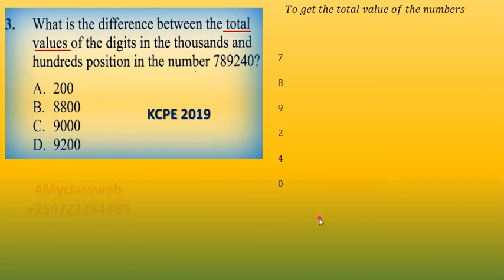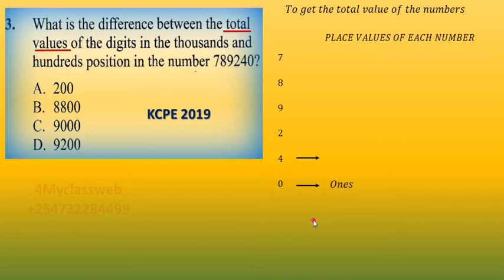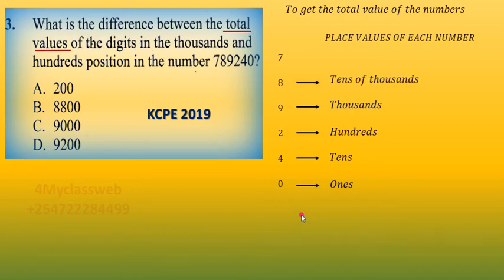Starting from the bottom. That is the common rule — you start naming from the bottom. We all know that the bottom number is always ones, followed by tens, followed by hundreds, followed by thousands, then ten thousands, and finally hundreds of thousands.